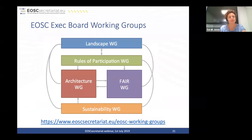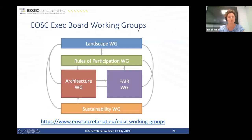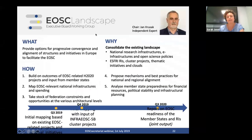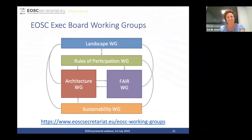Sarah Jones will now go through the five working groups established so far. The five topics being addressed are: Landscape, looking at what's happening in different member states; Rules of Participation, defining rights and obligations; Architecture and FAIR, which together comprise the core infrastructure and building blocks of the EOSC; and Sustainability, which underpins everything to ensure the EOSC is viable going forward. Working group remits are available online.